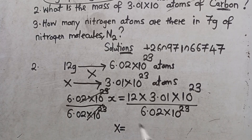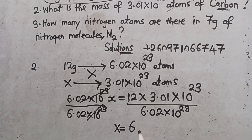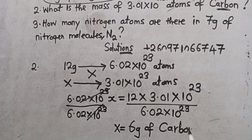Then I divide that answer by 6.02 times 10 to the power 23 — open bracket to avoid mistakes, then close bracket. What answer am I getting? I'm just getting 6. So I'll say 6 grams of carbon. This is what I need to do — 6 grams of carbon. So this is my answer.